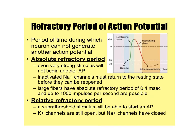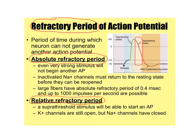The refractory periods: you have the absolute refractory period, which is the phase right after the action potential fires where no matter how strong the stimulus is, that neuron cannot fire another action potential — it is simply not ready. Then you have the relative refractory period, where the neuron can fire an action potential, but it takes a very large stimulus in order to get it to fire.